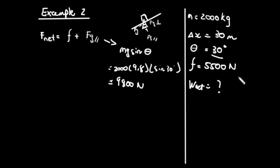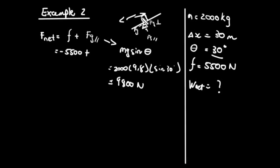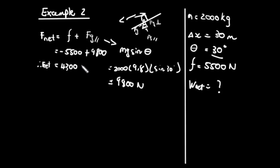The force of friction acts in the opposite direction — the truck is going down and friction is going up, so I'll take friction as negative. Therefore, F_net = −5,500 + 9,800, because FG parallel is parallel to the motion of the truck. This gives us a net force of 4,300 N.